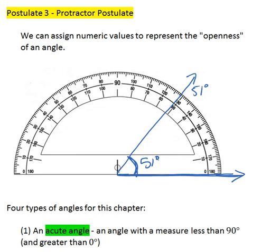So this angle has an openness, and the numeric value we use to represent that is 51 degrees. So if I tell you an angle has a measure of 51 degrees, you should always be able to construct an angle that has exactly that amount of openness.